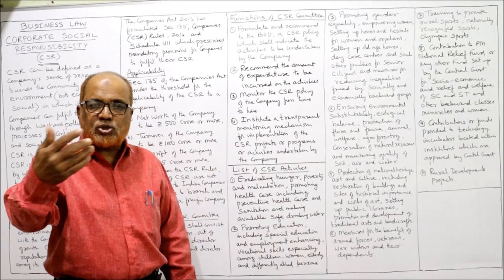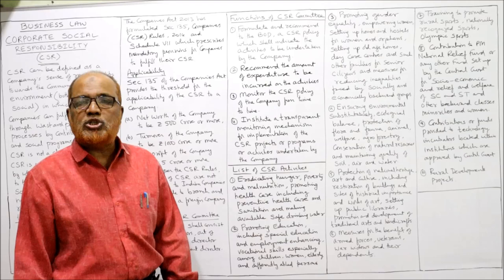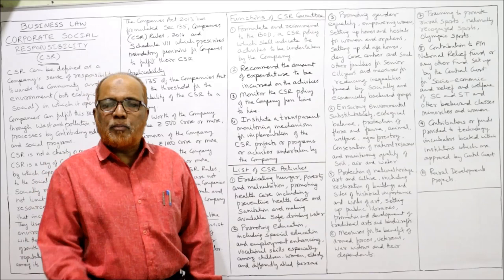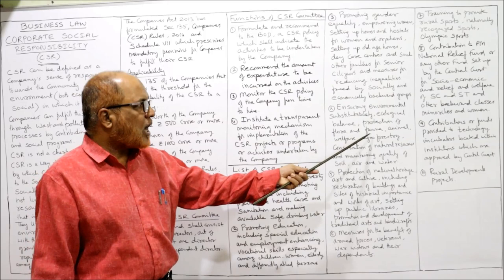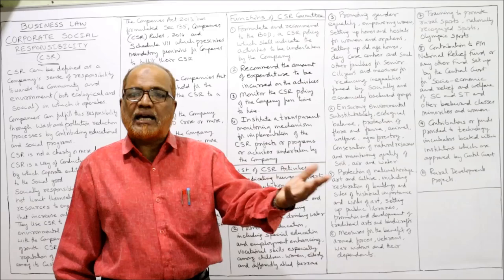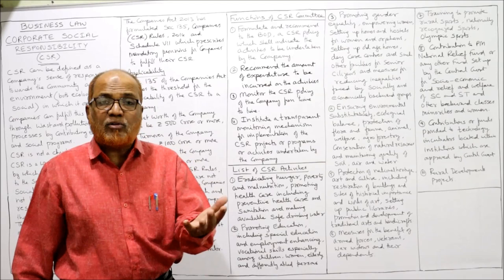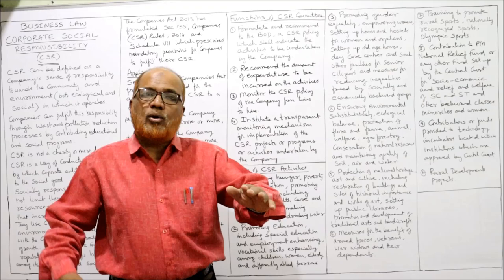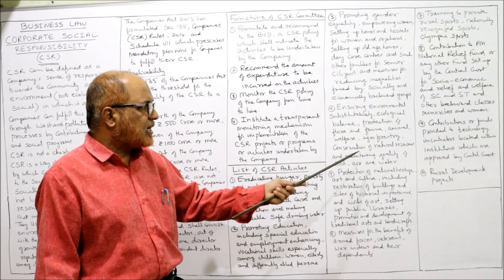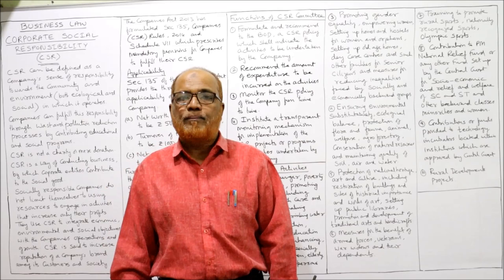The fourth activity is ensuring environmental sustainability — maintaining ecological balance and protecting the environment. This includes protection of flora — naturally grown plants — and fauna — insects and animals that grow in those plants. Activities include animal welfare, agroforestry, conservation of natural resources, and maintaining the quality of soil, air, and water.